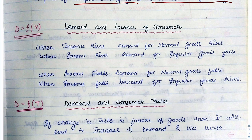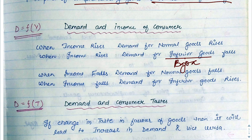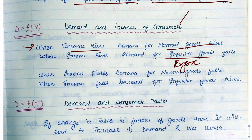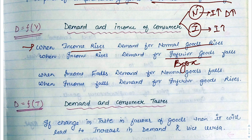Next is demand and income of the consumer. If a consumer's income increases, the quantity consumed will also increase — but this is only in normal goods. For inferior goods, for example, a consumer who consumed 1 kg of coarse grain but whose income has increased will switch to better quality food like wheat. So for inferior goods: if income increases, demand for the inferior product falls. For normal goods: income increases, demand increases.